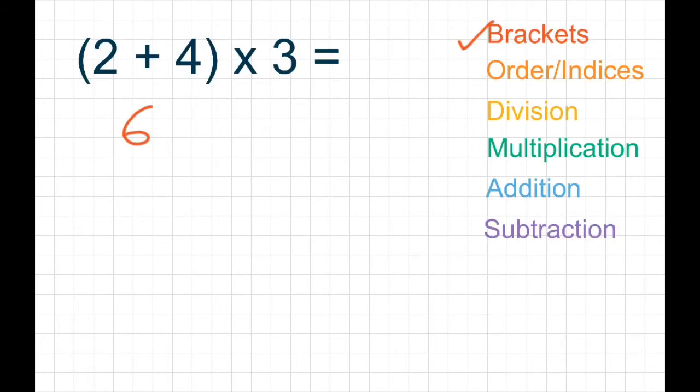Then we look for any orders or indices. We don't have any of them. Then we look for any division symbols. We don't have any of them. Multiplication symbols, we do have one of them. So it would be 6 times 3. And that would give us an answer of 18. And because we don't have any addition or subtraction symbols, that is where we stop. So our final answer for this sum is 18.